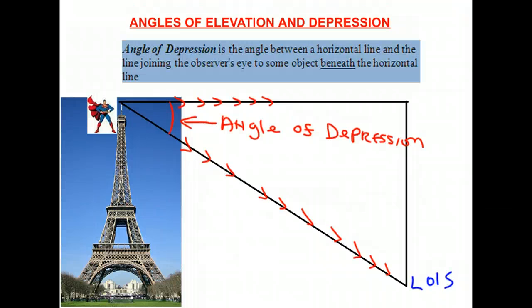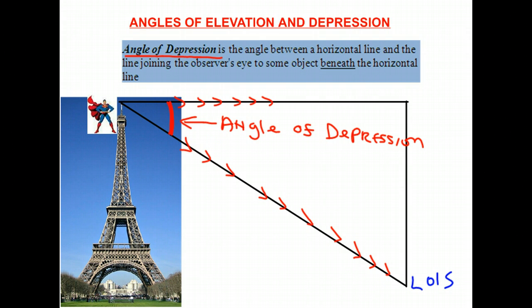Here's our formal definition: the angle of depression is the angle between the horizontal line and the line joining the observer's eye to some object beneath the horizontal line. The line joining the observer's eye to the object is called the line of sight. The key word here is 'beneath' the horizontal line — that is what distinguishes the angle of depression.